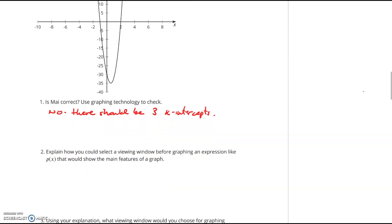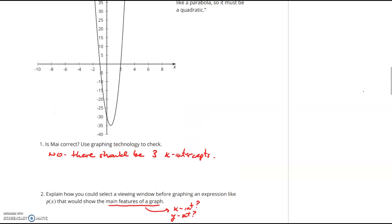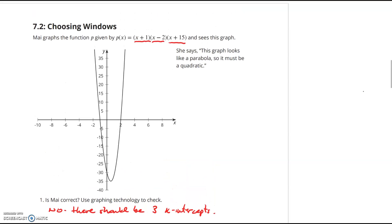Going down to part two here: explain how we could select a viewing window before graphing an expression like this that would show the main features of the graph. What we're really interested in here in this lesson is we want to know where are my x-intercepts and where is my y-intercept.